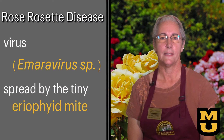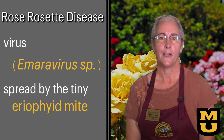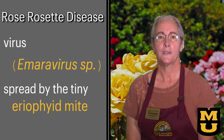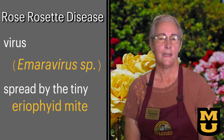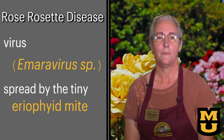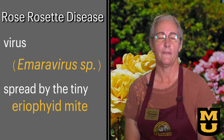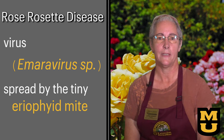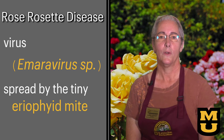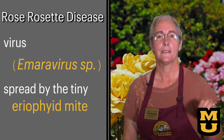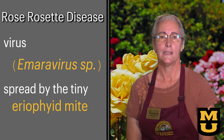So what is rose rosette disease? It's an incurable disease caused by a virus that is spread by the microscopic eriophyid mite. These mites are invisible to the naked eye. They drift on the wind coming into your garden, onto your roses, and infecting the rose bush with the virus as it feeds. A non-infected mite landing on an infected rose bush can pick up the virus and then is blown on to infect the next rose that it comes in contact with.